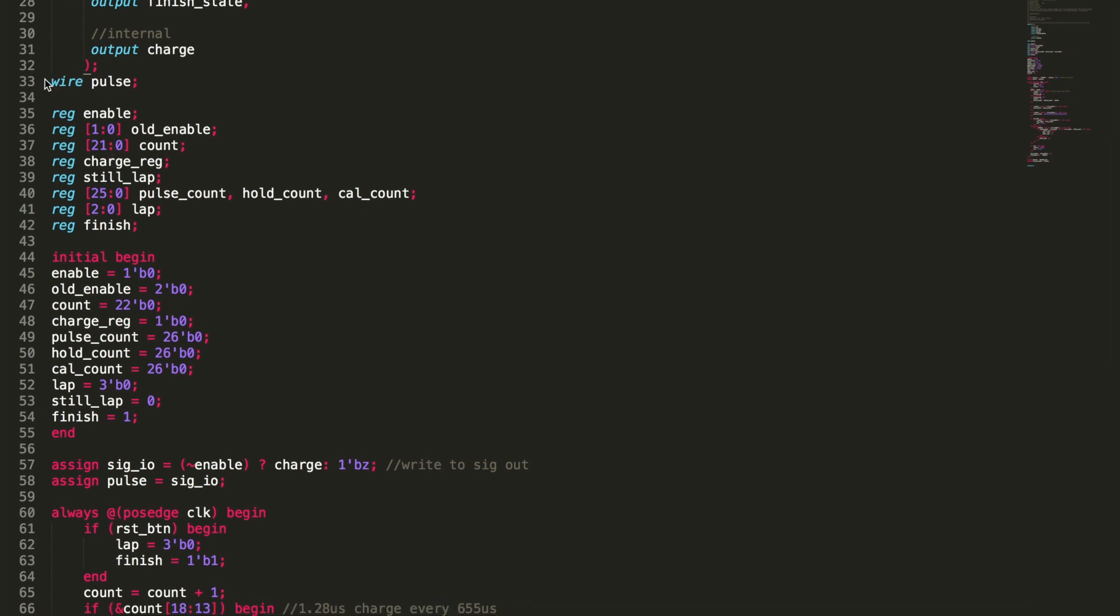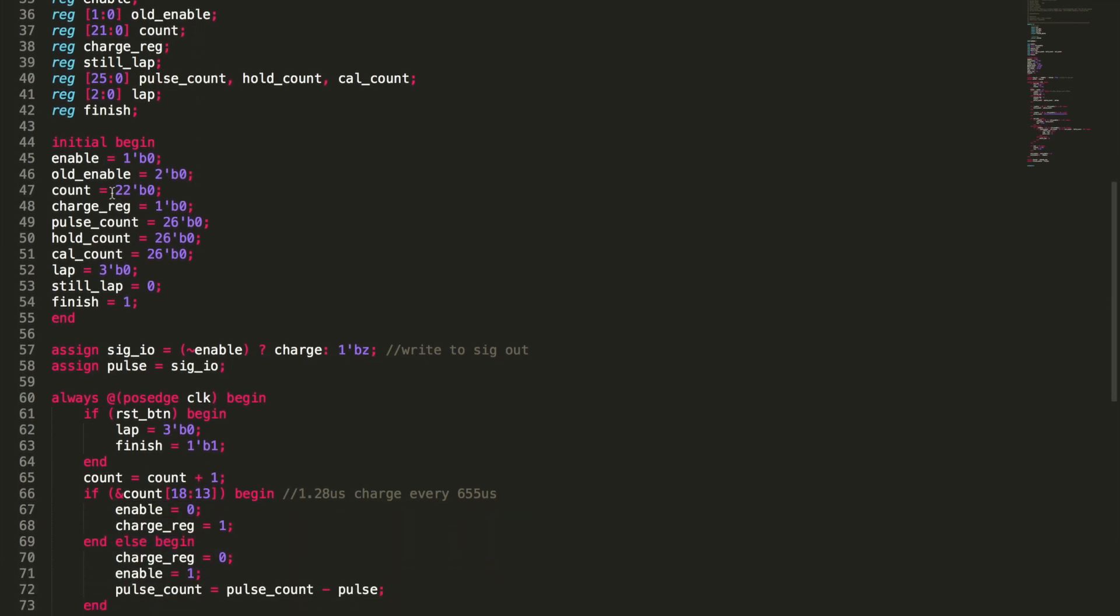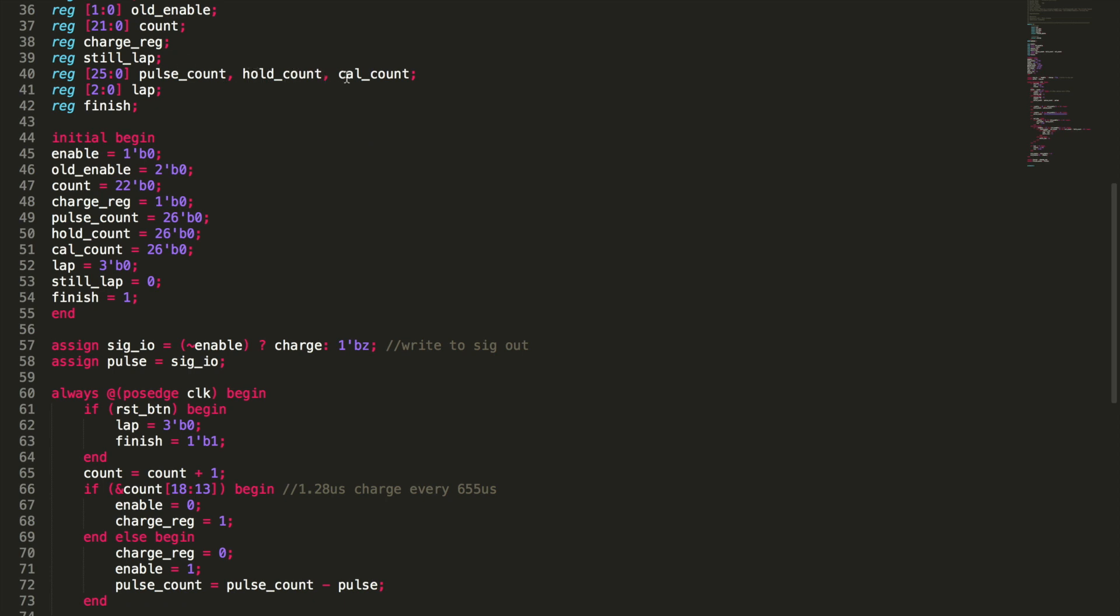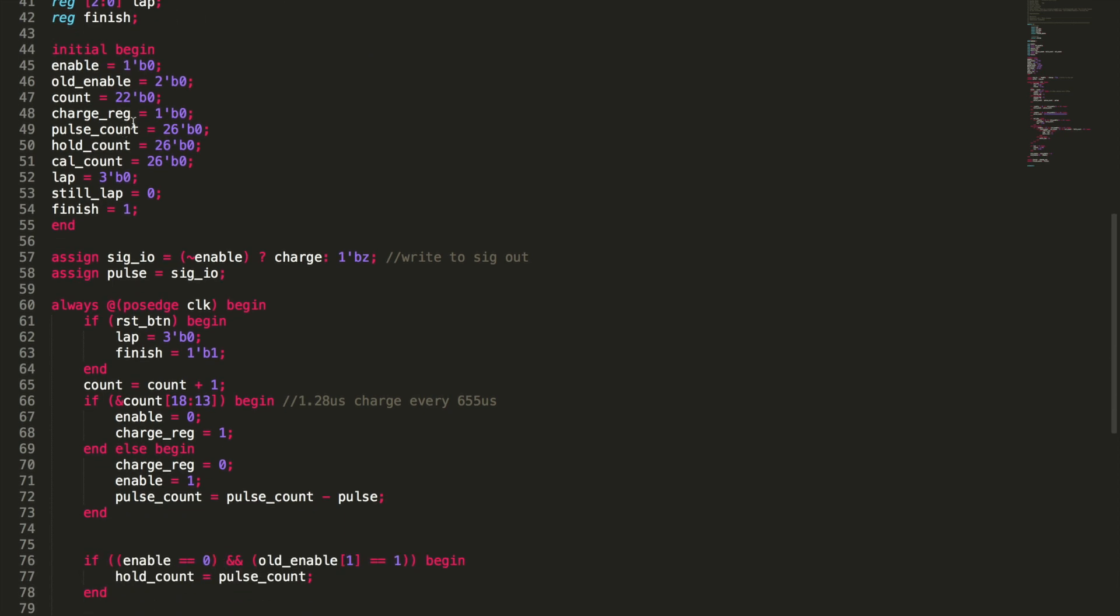So we'll go into this. We've got a wire that's pulse. We got some registers. You got enable old, enable, count charge. We'll kind of see what all these are. As we go through the code, pulse count, hold count, cow count lap finish. And then we're going to initially set everything to zero. Cause it always floats and you never know what it is, set for one. We're going to set for finish. We're going to set that to one and we're going to check if it's zero. That's just kind of the way a lot of this works out. Sometimes the logic, sometimes you have to do reverse logic, one where you would like a zero and a zero where you would like a one, but it just makes it cleaner programmatically. Maybe not the way your mind sees it.